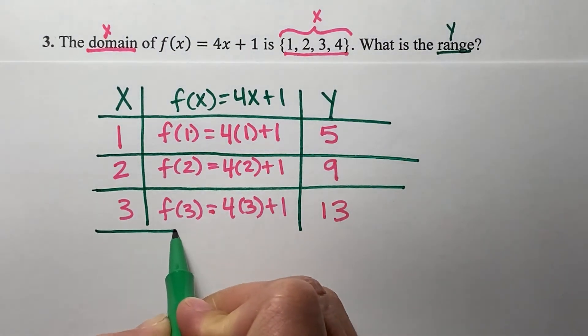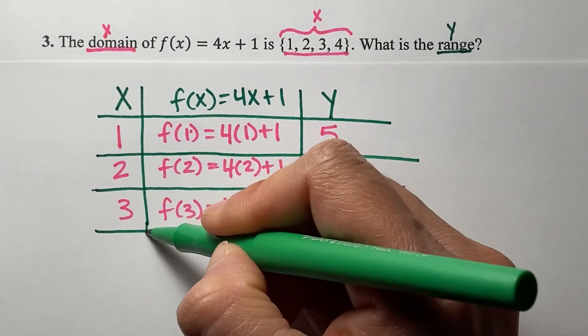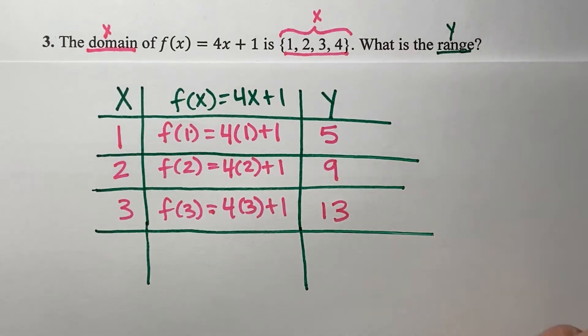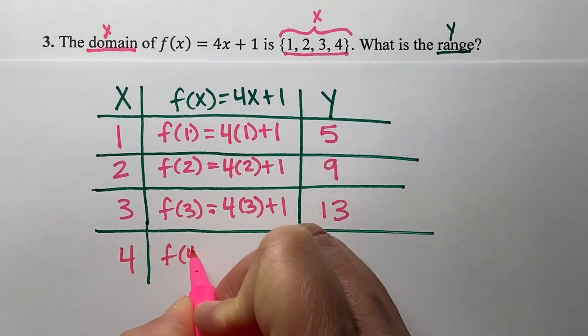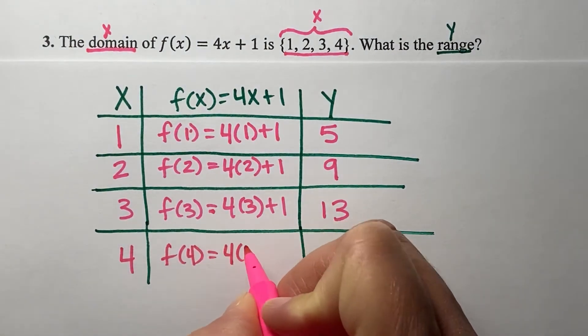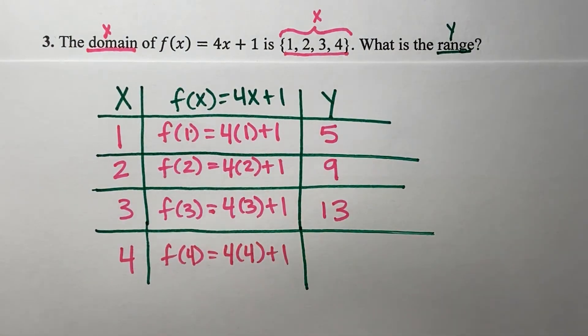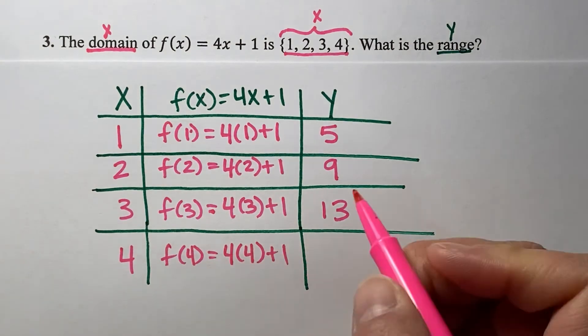I will continue until I've input all of my x values. My last x value is 4. So f(4) = 4 times 4 plus 1. 4 times 4 is 16 plus 1 is 17.